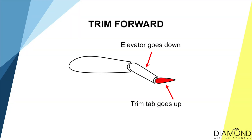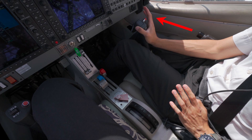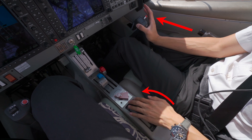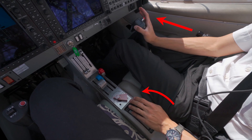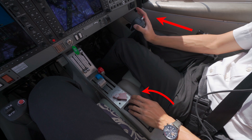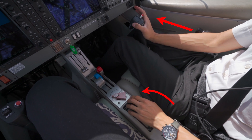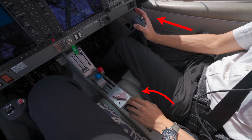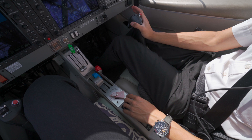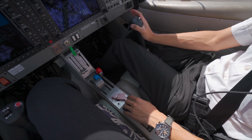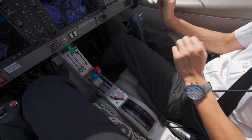When we are on descent, the same method applies. When we push the control stick forward to lower the nose, we also move the trim forward to release the constant forward pressure. We trim forward until we no longer need to push forward, and the aircraft maintains the same attitude. That's how we know the aircraft is trimmed.